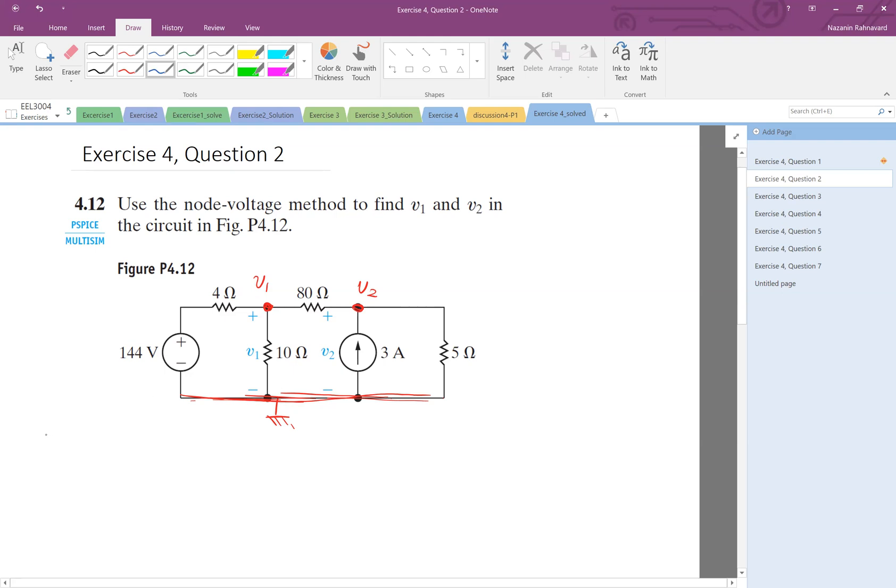Okay, so KCL at node V1. This is going to be V1 minus the voltage on the other side, which is zero. We see a 144 volt source. Based on the direction, this potential is more than here, so this is zero and this is 144 volts.